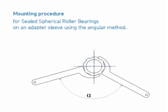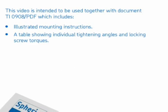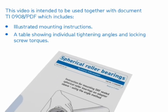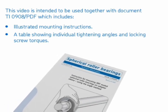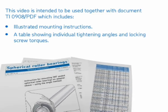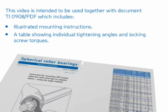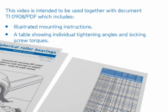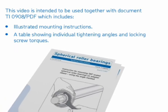Mounting procedure for sealed spherical roller bearings on an adapter sleeve using the angular method. This video is intended to be used together with document TI-09-08-PDF, which includes illustrated mounting instructions, a table showing individual tightening angles and locking screw torques.